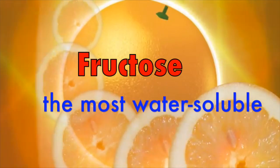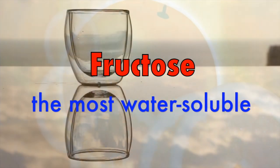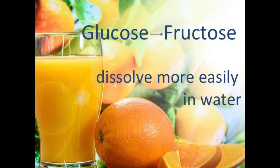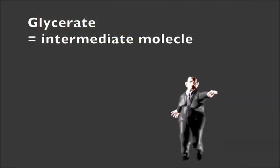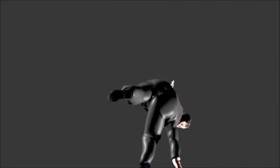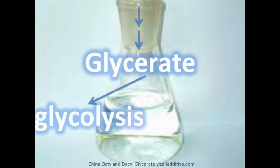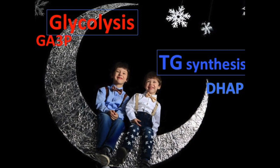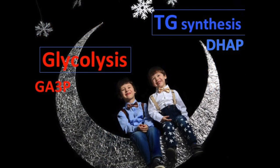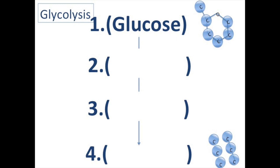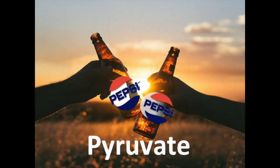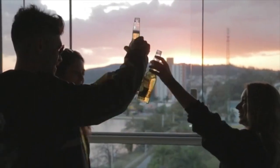Fructose, from fruit sugar, is the most water-soluble of all the sugars. Glyceride is the intermediate molecule in glycolysis and in triglyceride synthesis. And pyruvate!